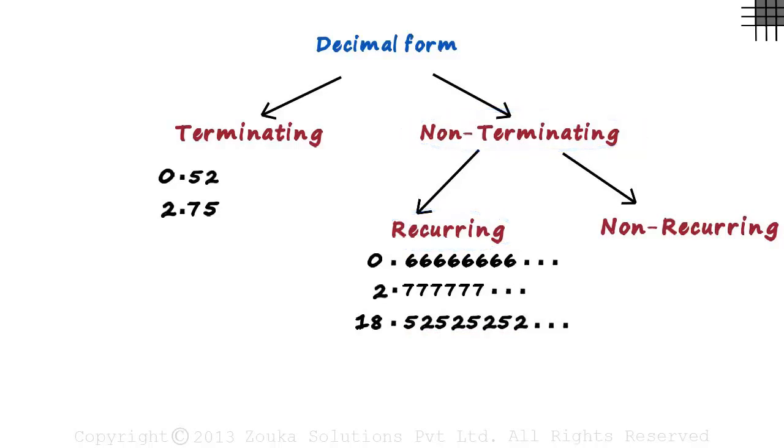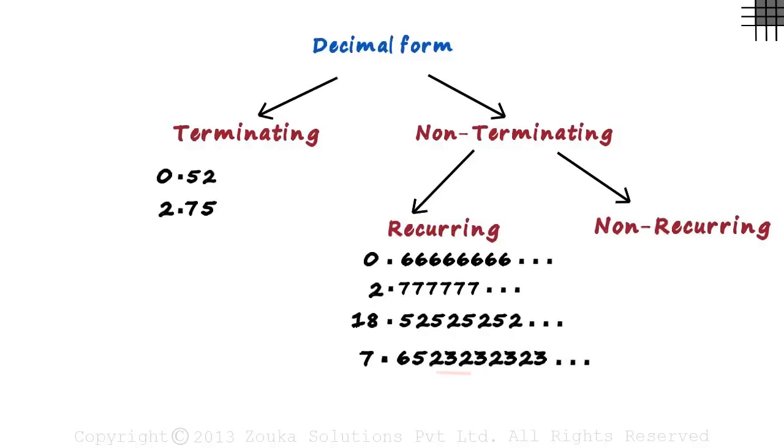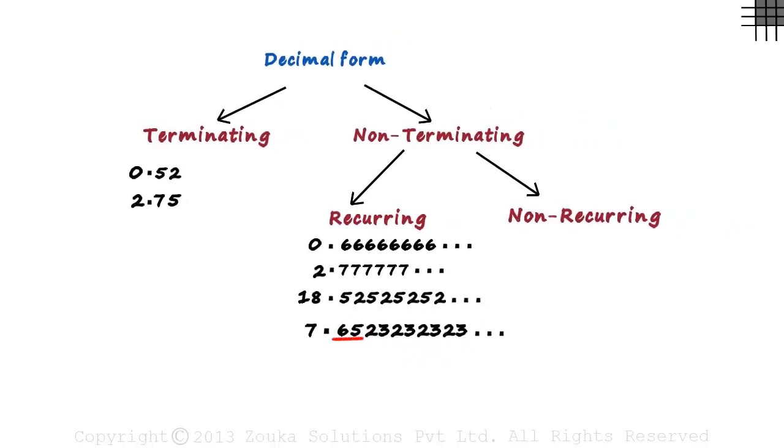Also does it mean that the repeating part starts immediately after the decimal point? No. Let's look at 7.65232323 and so on. Here, the number 23 is repeated and goes on forever. But the decimal part starts with 65. Even such numbers are classified as non-terminating recurring decimals.